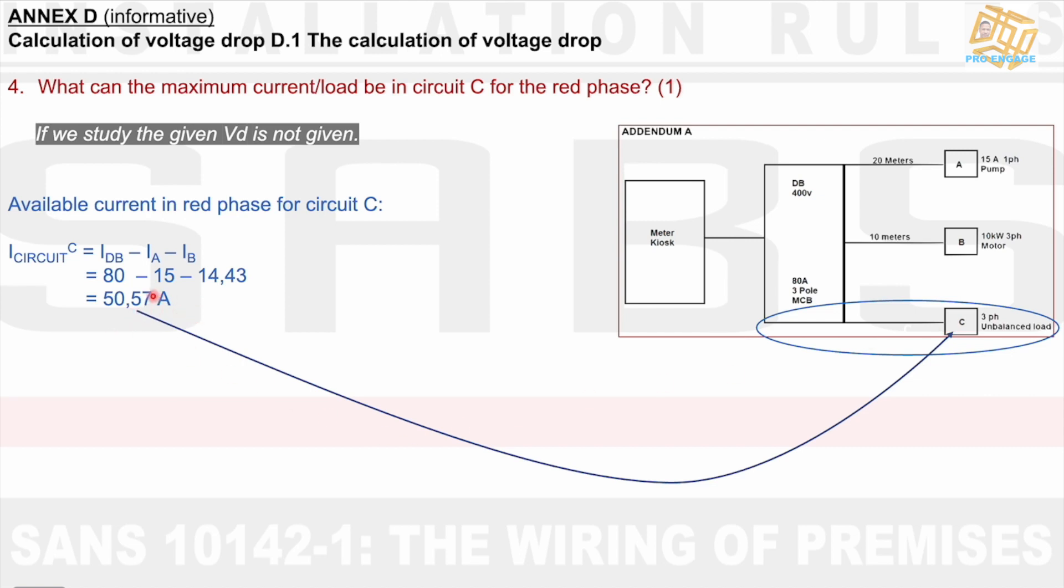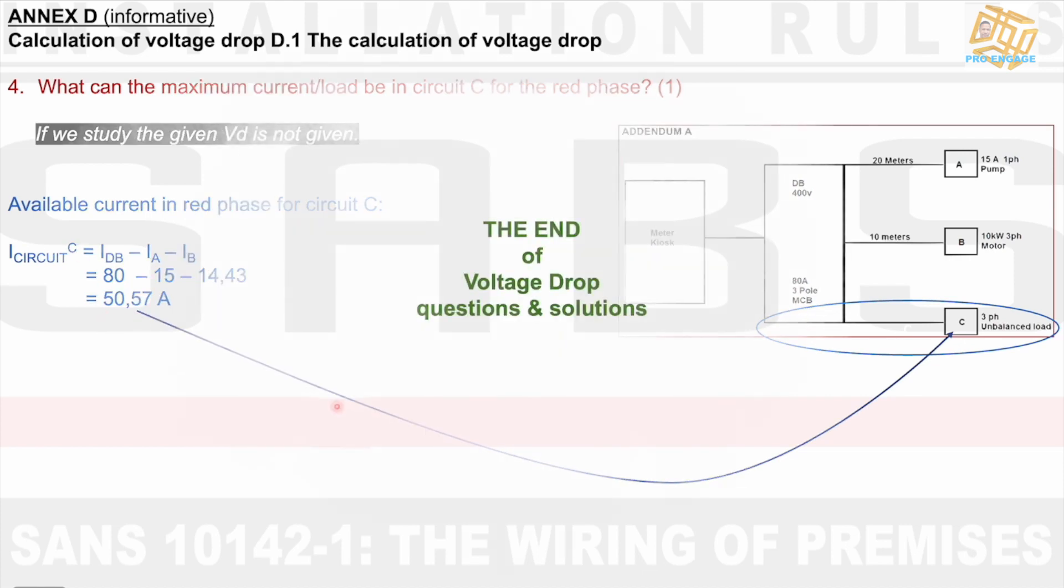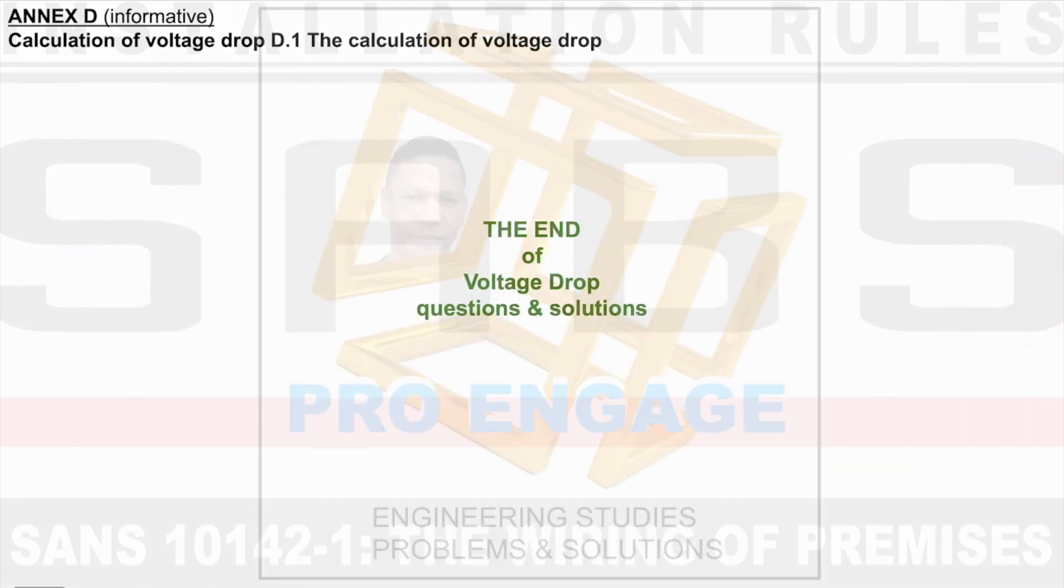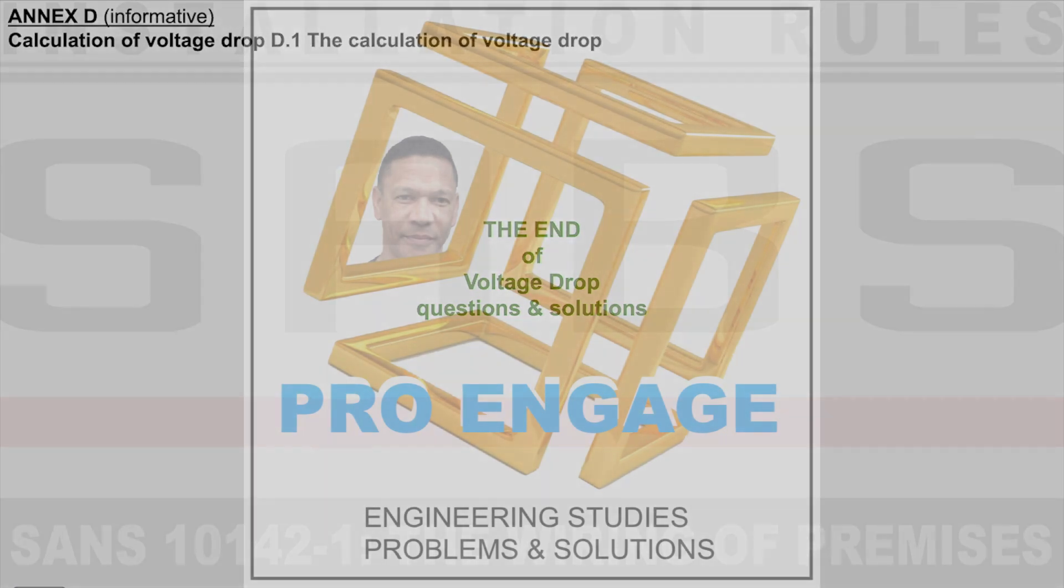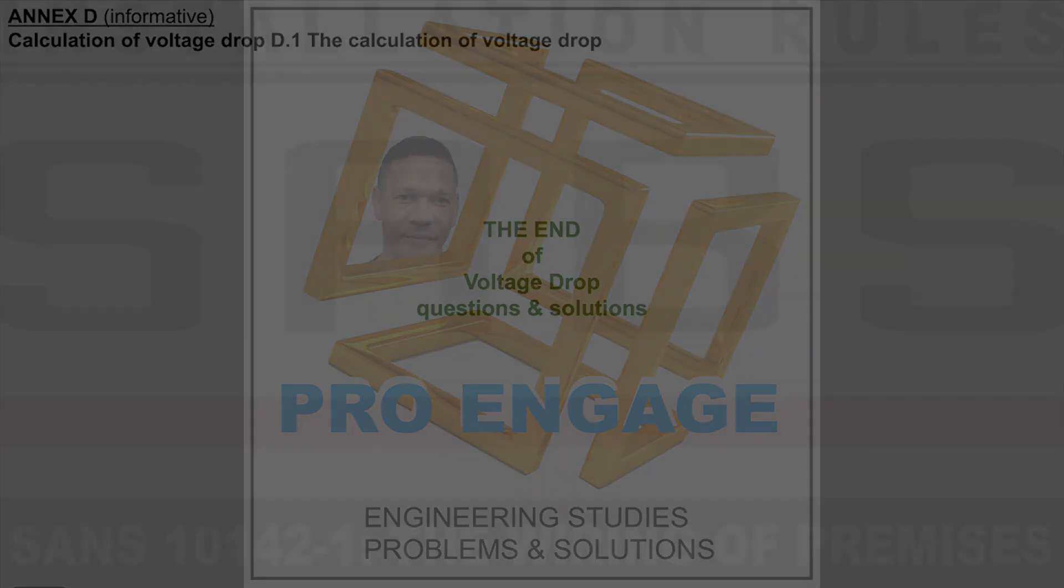Simply put that I total, or I DB, would be equal to the sum of Ia, Ib, and Ic. This concludes Voltage Drop. I hope it was enough information, and I hope that it would help you in your exams, in your studies. Best of luck and good luck with the Voltage Drop calculation.